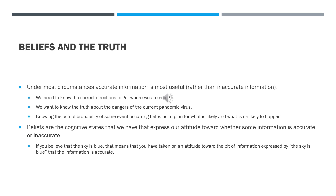Sometimes inaccurate information may be helpful, where we know certain inaccurate information would help someone's emotional state or something like that. But in most cases it's very important that we have accurate information. We need to know the correct directions to get where we're going, we need to know the truth about the dangers of the current pandemic, and we need to know the actual probability of certain events that will occur in the future so that we can plan for what's likely and unlikely to happen.